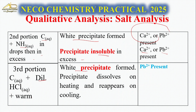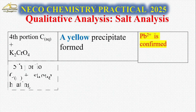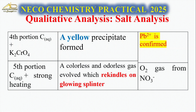Take another portion, add dilute H₂SO₄, and warm it. A white precipitate forms, which dissolves on heating and reappears on cooling - this confirms Pb²⁺. For the confirmatory test, add K₂CrO₄ to a portion. A yellow precipitate forms, confirming the presence of lead, Pb²⁺.